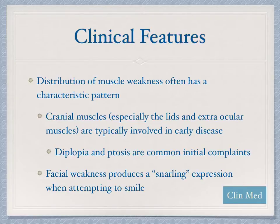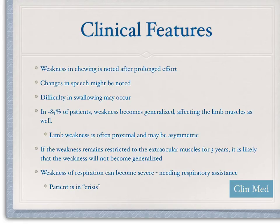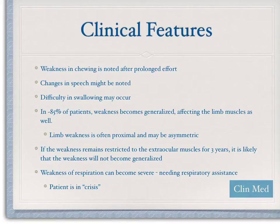In addition, because we're constantly using our mouths to eat, smile, talk, and communicate, this can cause weakening of those muscles and changes to facial expressions. You can also have weakness in chewing, changes in speech, and difficulty swallowing from repeated use of these muscles. Limb weakness is often proximal and typically asymmetric.